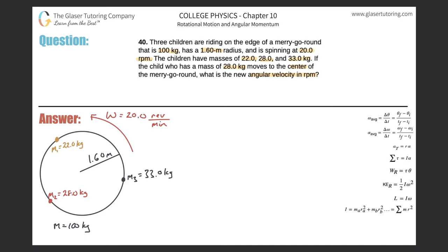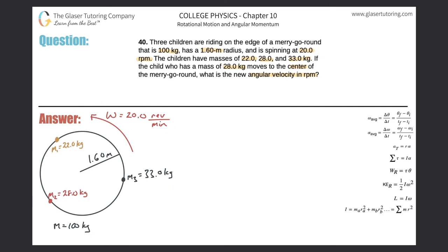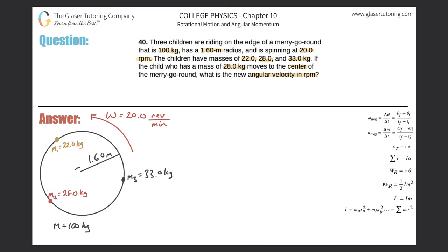There's a lot of given information. The overall picture is that we have changing conditions. Initially the merry-go-round is moving at 20 revolutions per minute, and we have three children each located at a certain point relative to the axis of rotation. What's going to happen is that the 28 kilogram child will move to the center, and we have to find out how the angular velocity changes.